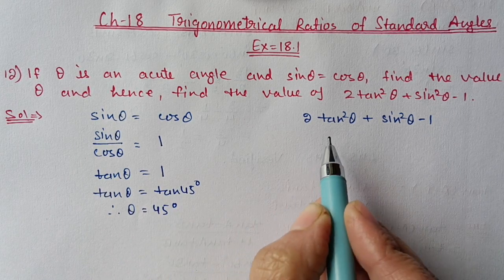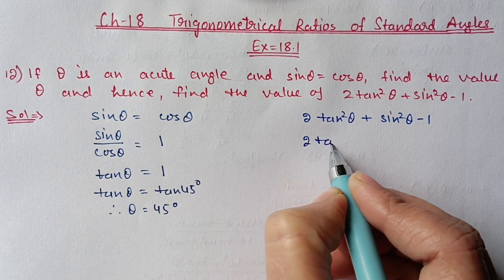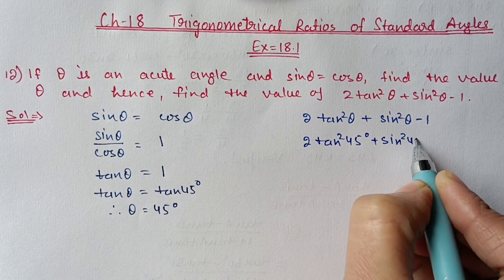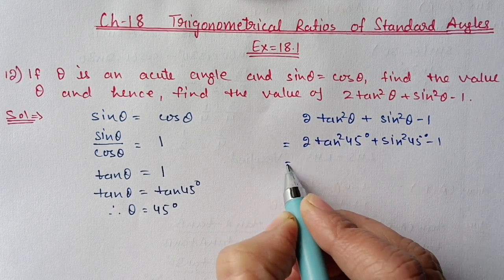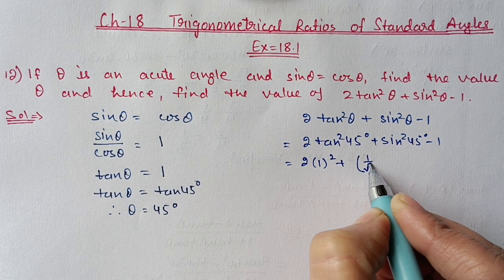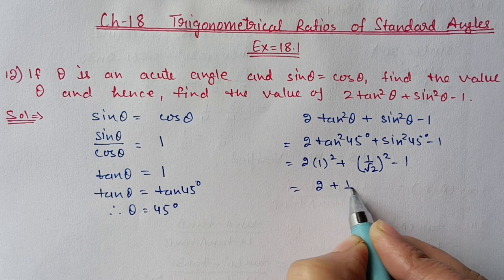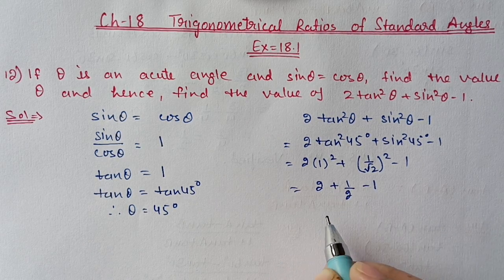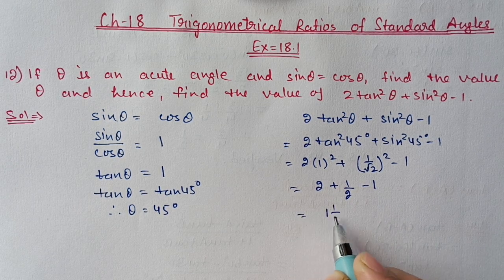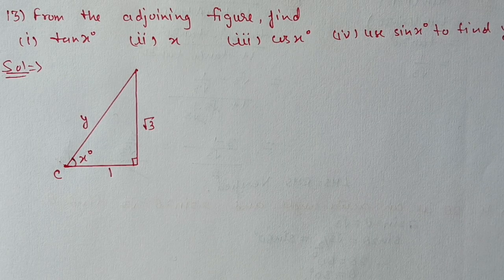Now we substitute theta equals 45 degrees into the expression: 2 tan squared 45 plus sin squared 45 minus 1. Tan 45 value is 1, so 1 squared gives 2. Sin 45 value is 1 upon root 2, so sin squared 45 is 1 by 2. We get 2 plus 1 upon 2 minus 1. After simplification: 2 minus 1 gives 1, plus half gives 1 and a half.